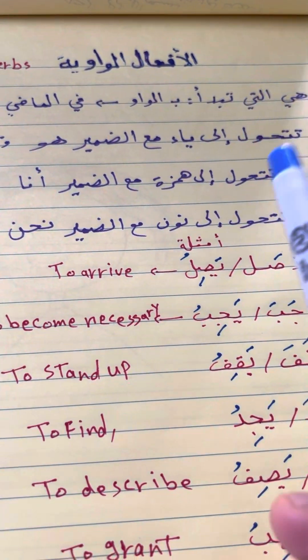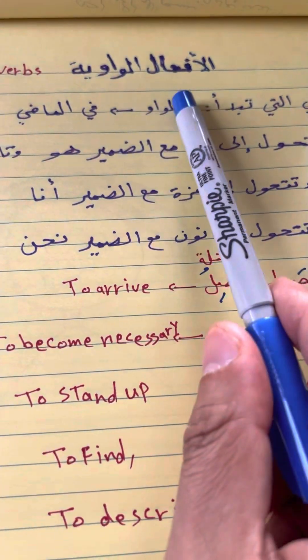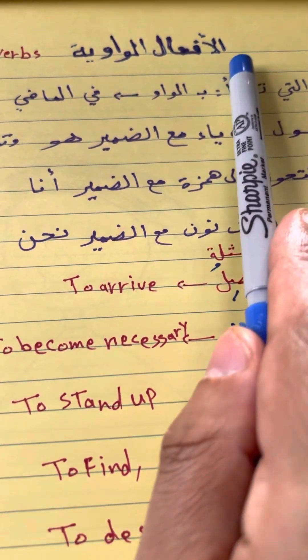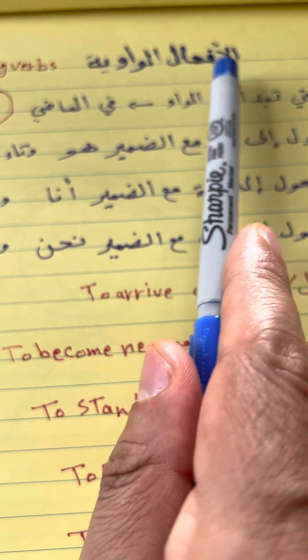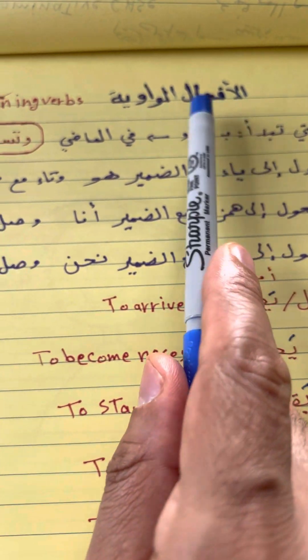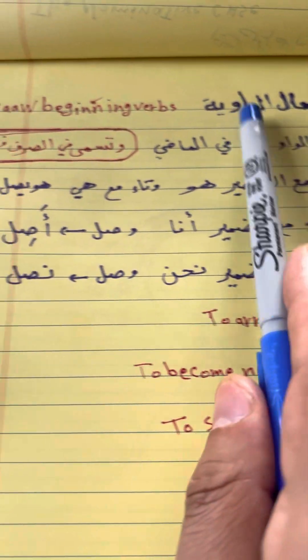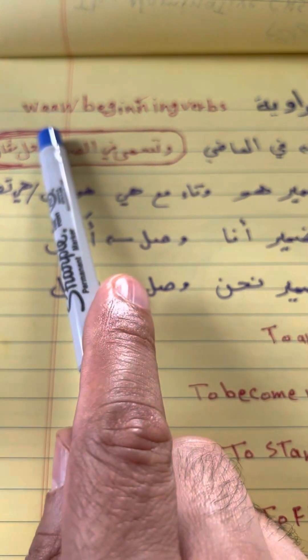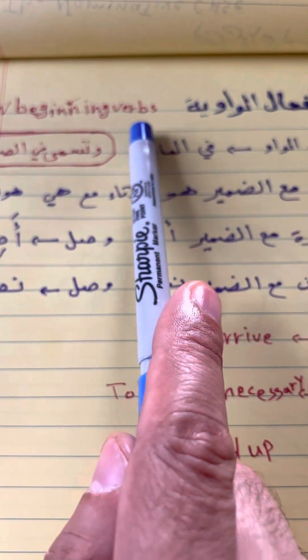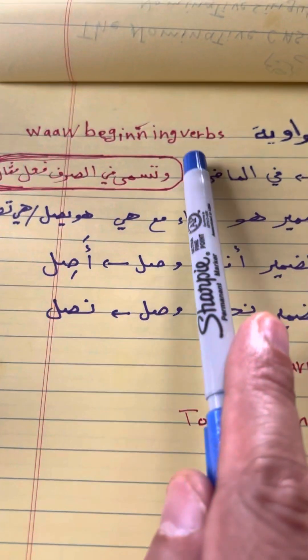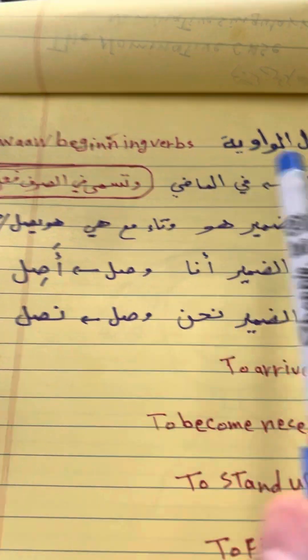As-salamu alaykum wa rahmatullahi wa barakatuh. Today we're talking about al-af'aal al-waawiyya — al-af'aal al-waawiyya — the waaw beginning verbs.